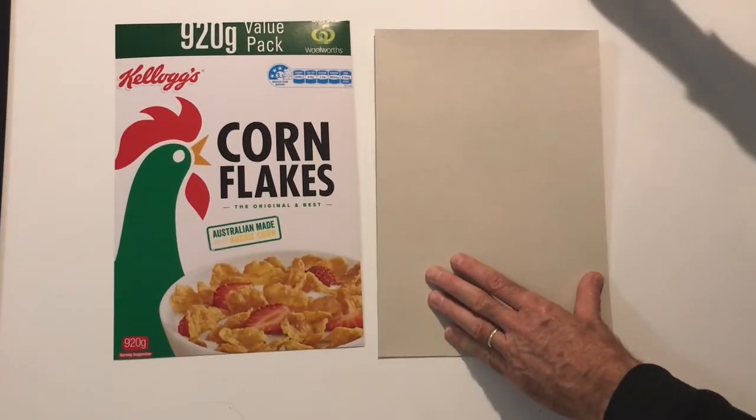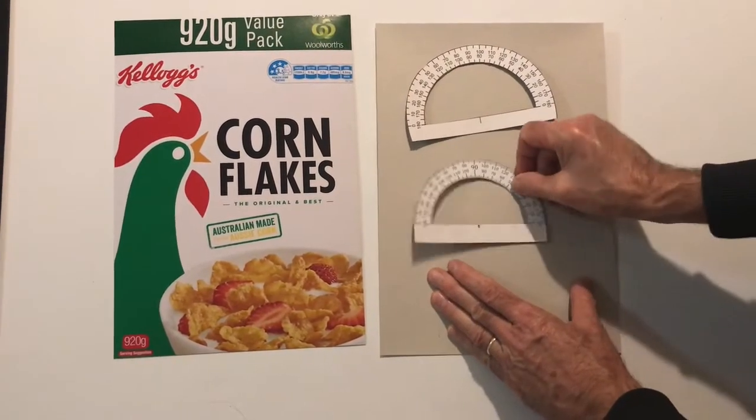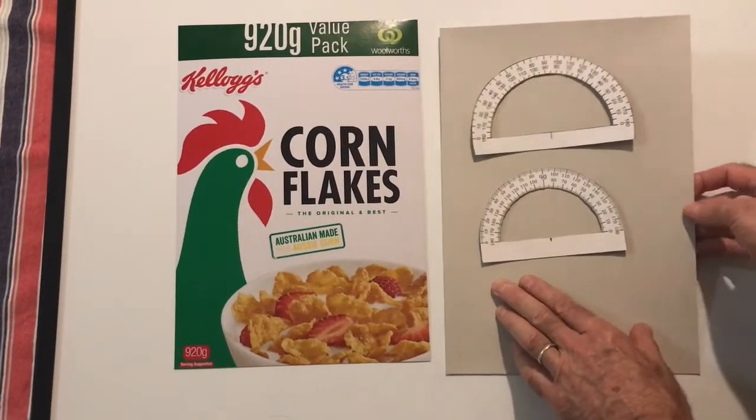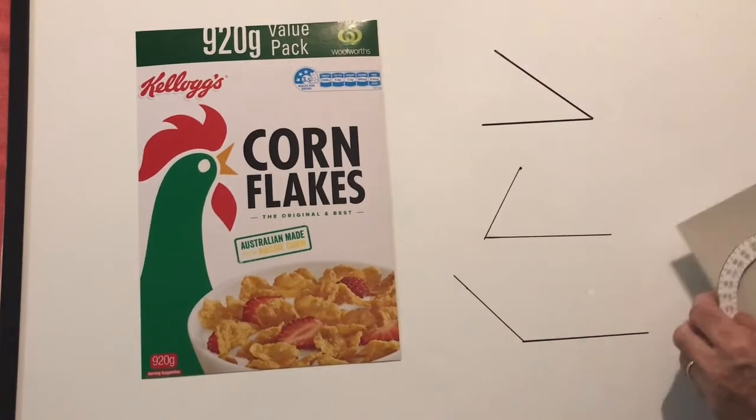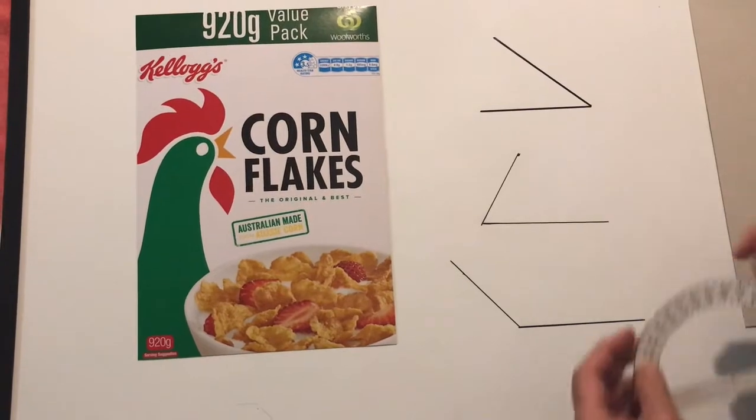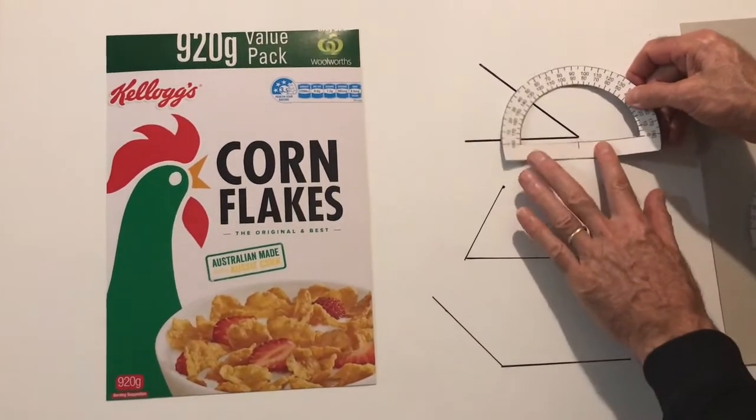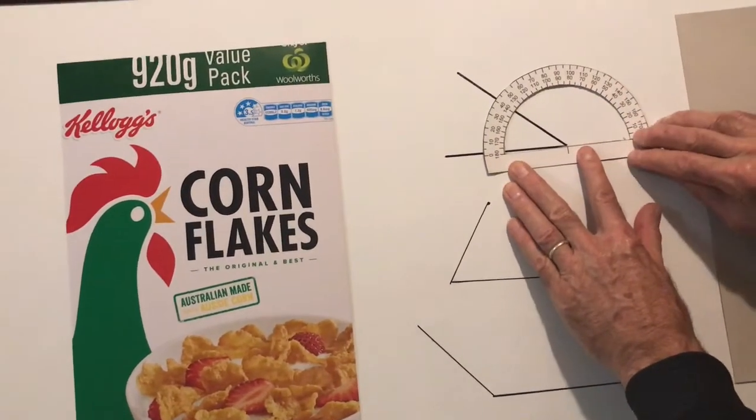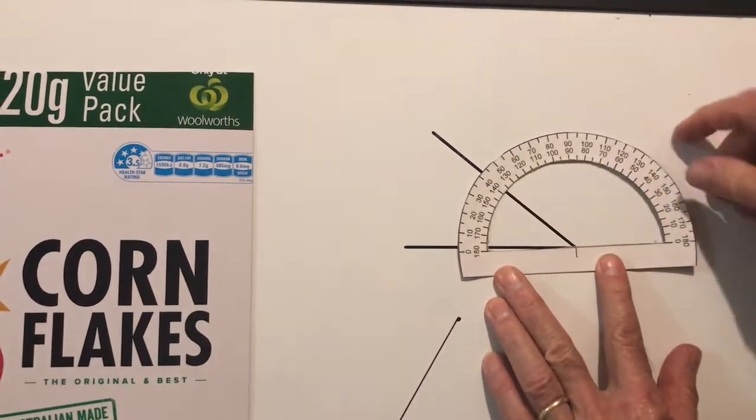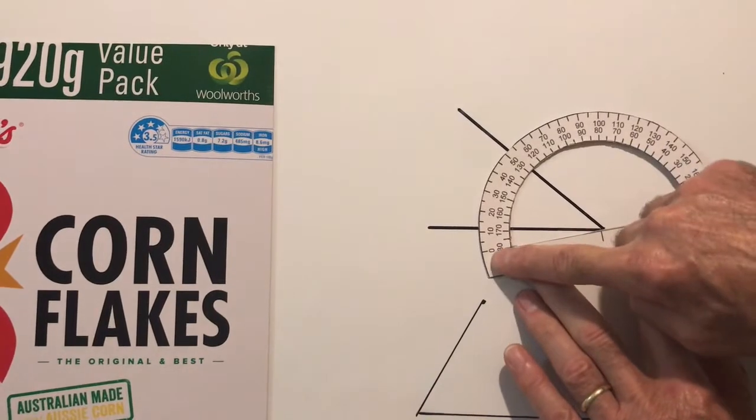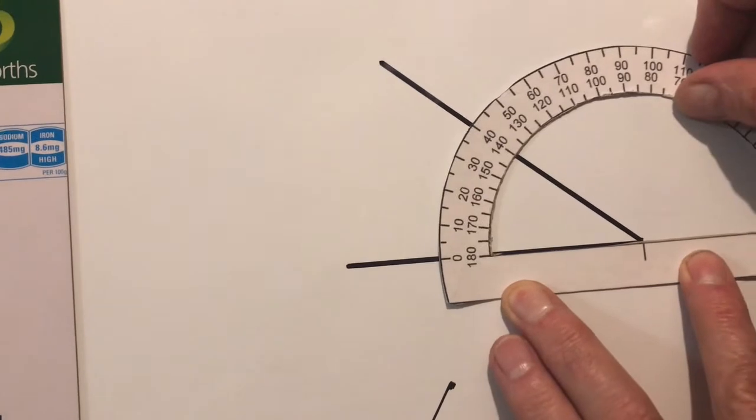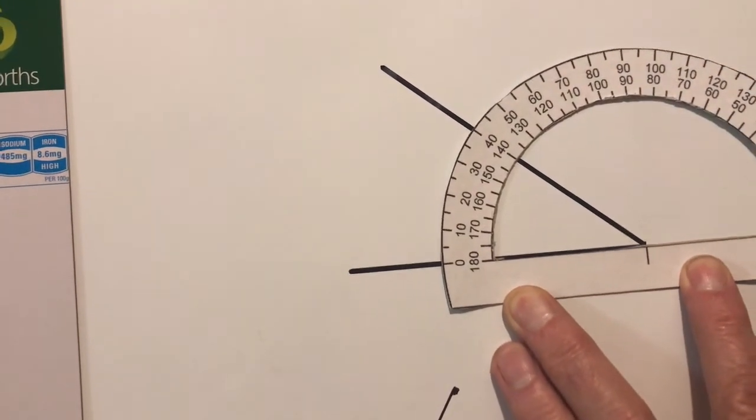When you have done that they will look like that. If I use the first protractor and I have a look at this angle and I want to know what is the angle between the lines, I center my protractor on the very point of the angle. I then take the zero and I put it on the other end of the line. Now I'm ready to measure.